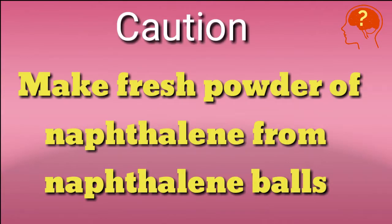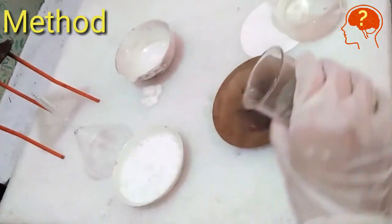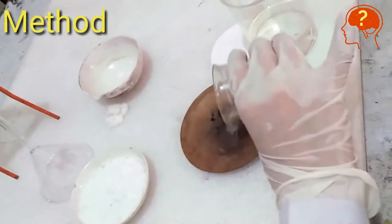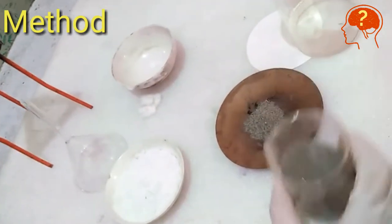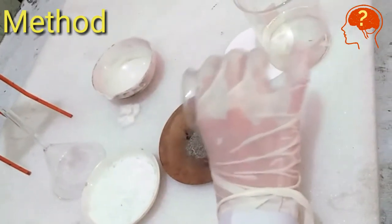Make fresh powder of naphthalene from naphthalene balls, otherwise crystals will not appear. Method: Put some sand into sand bath. One of my students, Mariam, is demonstrating this whole process.